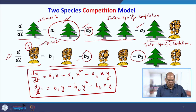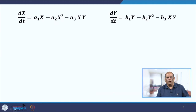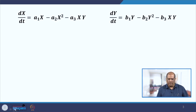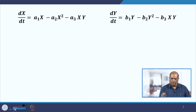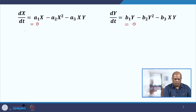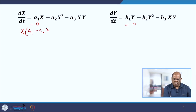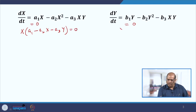Now let us do a little analysis of this. We have these two models, x and y — they can be the densities, and generally we take them as densities. The very first thing to do is find the equilibrium solution, and for that we set dx/dt = 0 and dy/dt = 0. Taking x common: x(A1 − A2·x − A3·y) = 0, and taking y common: y(B1 − B2·y − B3·x) = 0.